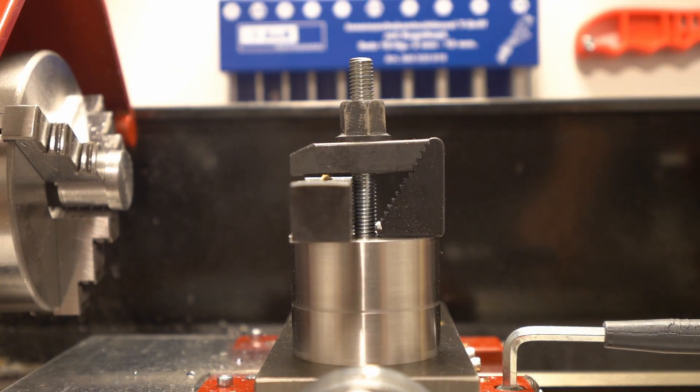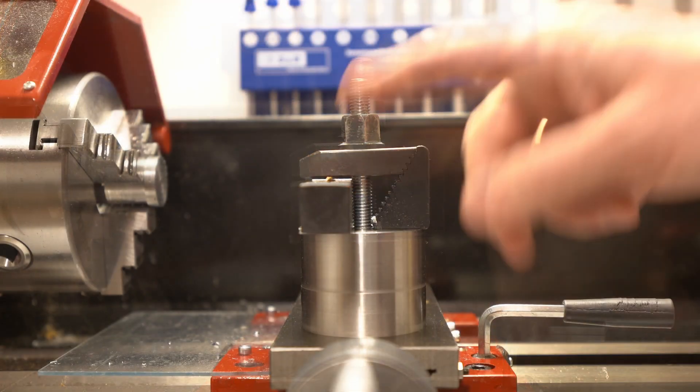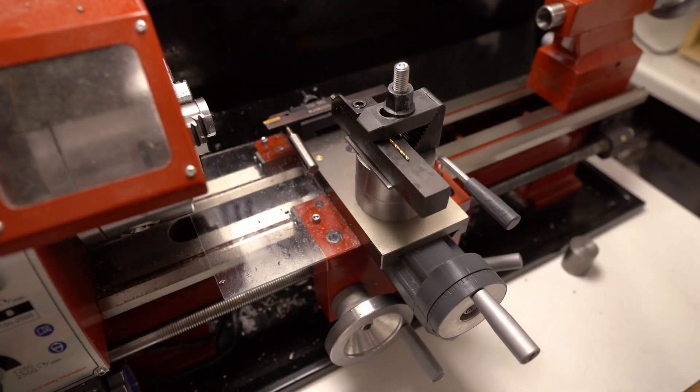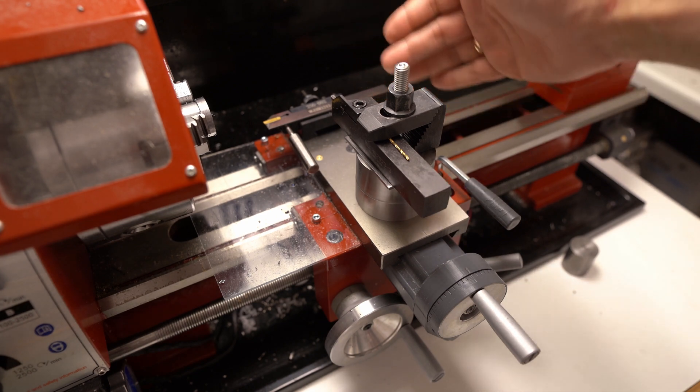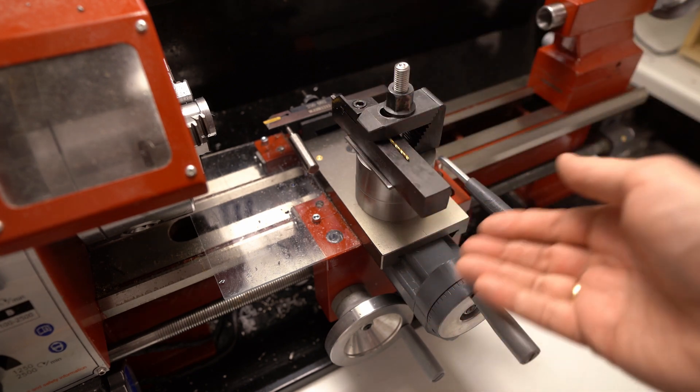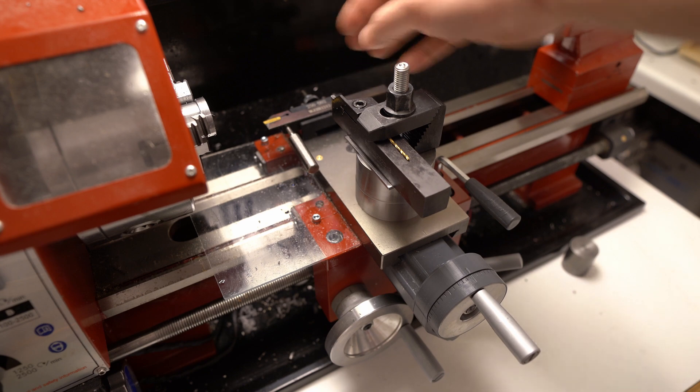Now this is absolutely rock solid and obviously you can put other tools here, not just a parting tool. You can probably make this setup even more rigid if you just use a solid chunk of metal over here with the cutter sticking out just a tiny bit.